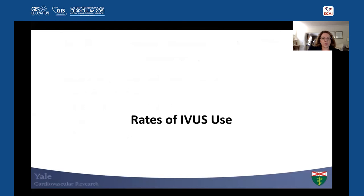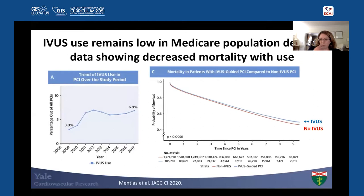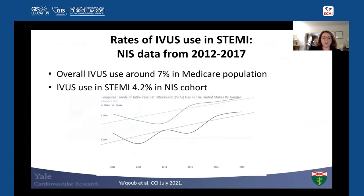What is the role of IVUS in STEMI? It can help identify plaque rupture, appropriate vessel sizing, ensure complete stent expansion with post-dilation, and evaluate for residual stenosis and dissection after the case. True reference vessel diameter may be difficult to assess in STEMI due to generalized and localized vasoconstriction from thrombus burden, catecholamine stimulation, inflammatory substances, and microvascular dysfunction downstream. Rates of IVUS use in the US: in a Medicare population from 2009–2017, IVUS use rose from 3% to almost 7%, yet only 7% of all PCIs use IVUS, despite data showing IVUS use results in lower mortality.